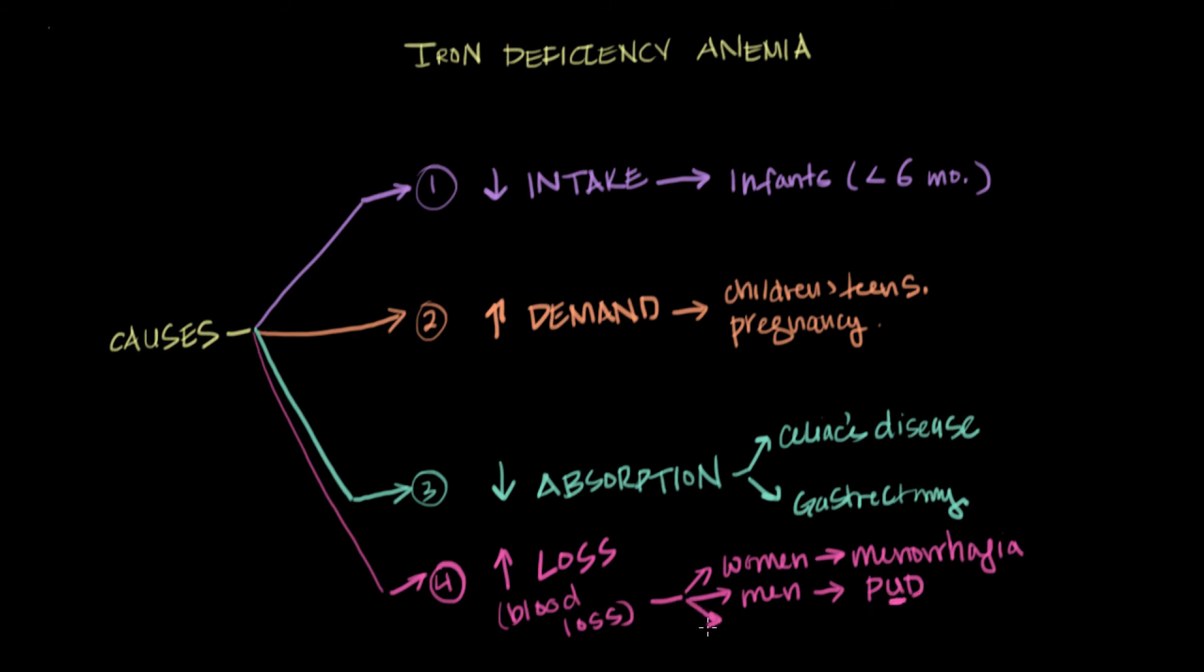In older people, elderly, colon cancer or colon polyps can do it. So much so that if an elderly individual presents with iron deficiency anemia, the first thing you do is check their stool for blood so that you can rule out colon cancer as the underlying cause of the iron deficiency anemia.